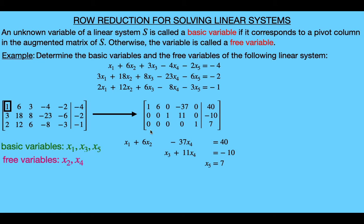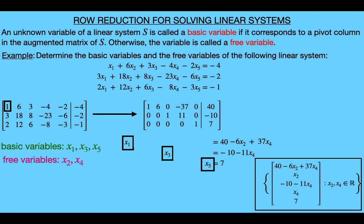So to solve the system, we're going to give a parametric description of the solution set, where the free variables will act as our parameters. We're going to get equations for the three basic variables x sub 1, x sub 3, and x sub 5, and we're going to make it so that these equations depend on the free variables x sub 2 and x sub 4. Notice that the reason we can solve for the basic variables is because the reduced echelon form ensured that each basic variable was in exactly one equation in the system. So to solve for our basic variables, we can just move the free variables over to the right hand side. For the first unknown we'll get this equation for x sub 1, this equation for x sub 3, and then x sub 5 is just equal to 7. So we can write the solution set as the set of all five-tuples, where the second and fourth entries are any real numbers, the first entry satisfies this equation based on the values chosen for x sub 2 and x sub 4, the third entry depends on the x sub 4 parameter, and the fifth entry will always be equal to 7.